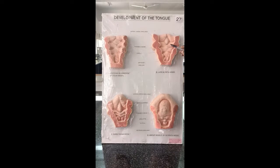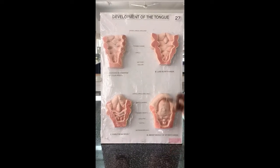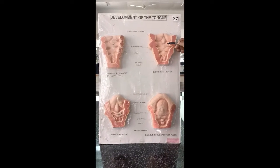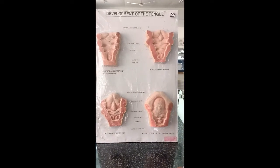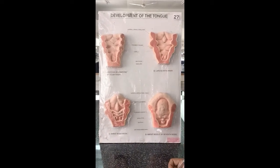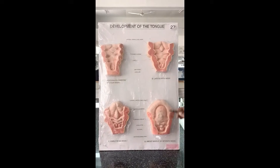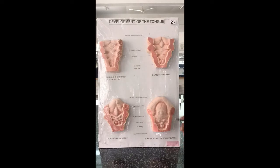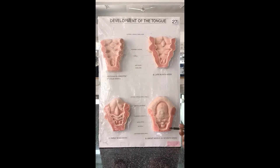The posterior one-third of the tongue is developed from the third pharyngeal arch, and that is why the posterior one-third is supplied by the glossopharyngeal nerve. The epiglottis and the posterior-most part of the tongue are developed from the fourth pharyngeal arch, and therefore are supplied by the vagus nerve.